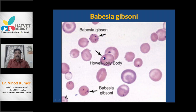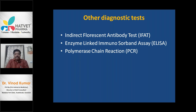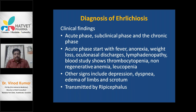Other diagnostic tests: if you have the facility you can do indirect fluorescent antibody test, enzyme-linked immunosorbent assay (ELISA), PCR, etc. PCR is highly diagnostic. That was something related to babesiosis. Then we are going to ehrlichiosis - otherwise known as canine monocytic ehrlichiosis - where we have the acute phase, the sub-acute phase, and the chronic phase.